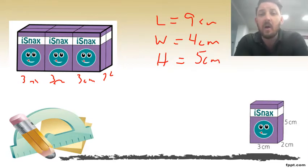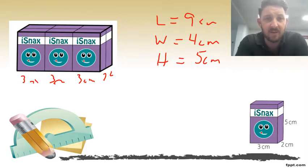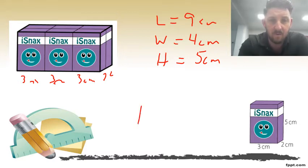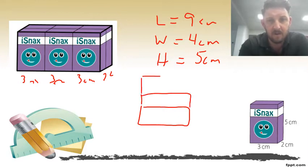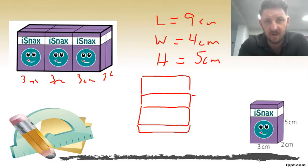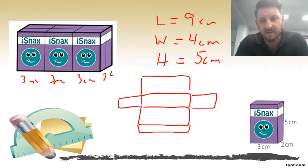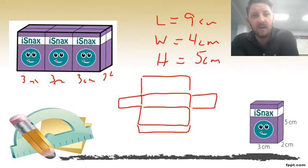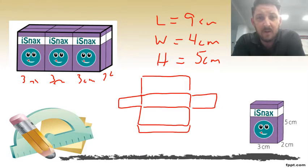This is going to help us because the next thing we need to do is know what the net of this shape looks like. The net of this shape has one big area, one little area, one big area, one little area, and then on the sides two long skinny areas. This is like composite rectangles — we're going to add up the six different rectangles to find the surface area.